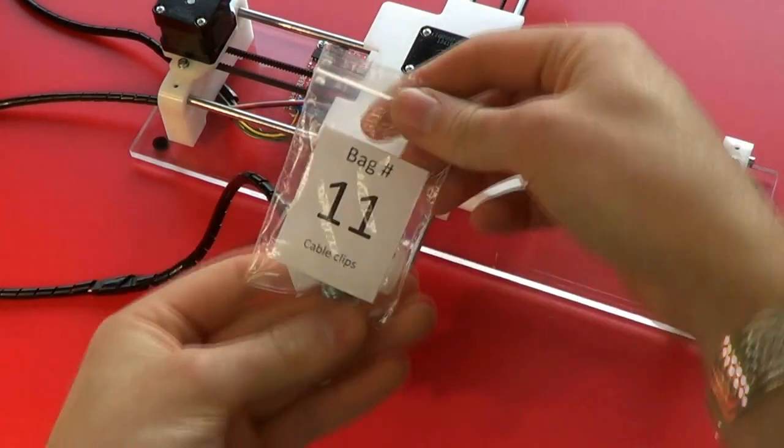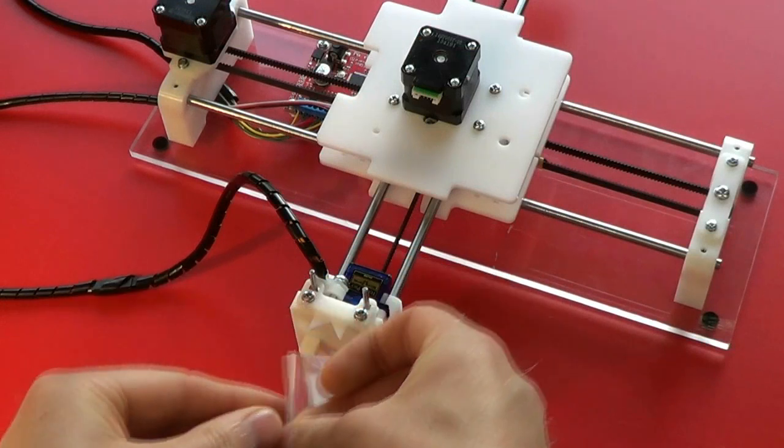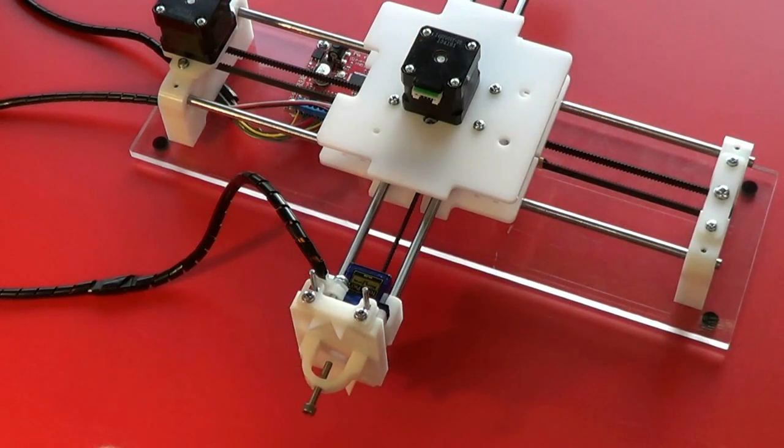Now we've got bag 11, which is cable clips. Open that up and we can start securing the cables.